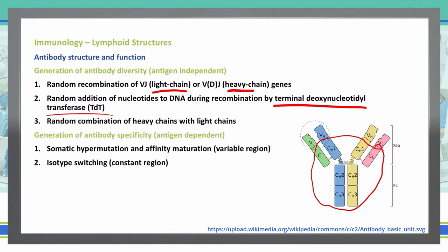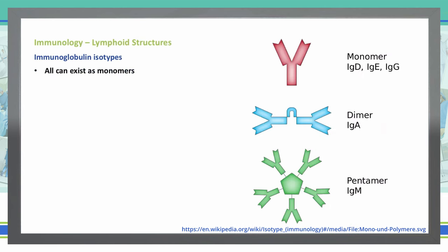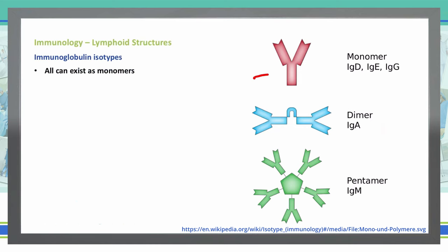Let's talk about the different isotypes of immunoglobulins. The isotypes can all exist as monomers. A monomer example is shown in the red color on the right. This is mostly going to be seen as IgG, IgE, and IgD; however, all of these can exist as a monomer.